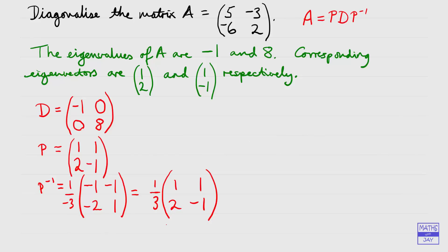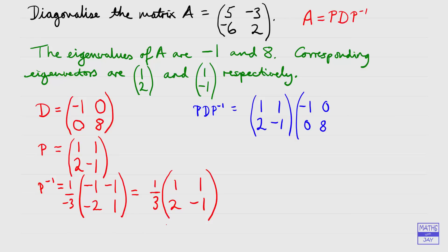Now we're ready to check that we have the correct values for P, D and the inverse of P. Multiplying those three matrices together: P is (1, 2; 1, −1), then the diagonal matrix (−1, 0; 0, 8). The inverse matrix has a factor of one-third outside it, so I'm going to bring that to the beginning — it'll make life easier if we do the fractional part at the end. We can multiply the first two matrices together first.